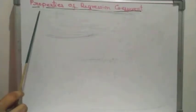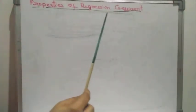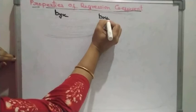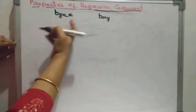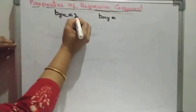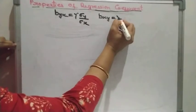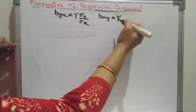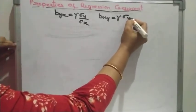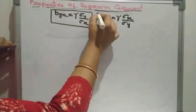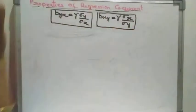Hello students. Today's topic is properties of regression coefficients. As you all know, there are two regression coefficients when we study simple regression: one is b_yx and the other is b_xy. b_yx is the regression coefficient of y on x, and b_xy is the regression coefficient of x on y. The formula is: b_yx = ρ · (σ_y / σ_x) and b_xy = ρ · (σ_x / σ_y), where ρ is the correlation coefficient and σ_x, σ_y are the standard deviations of x and y series respectively.